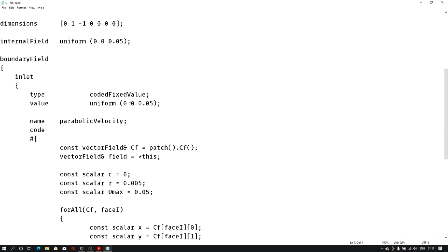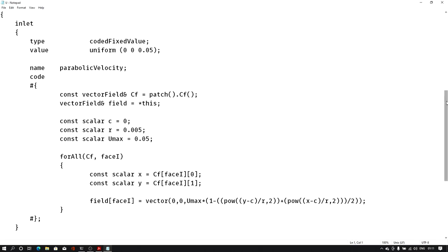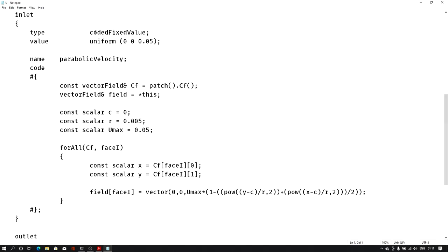Now here as you can see I have already defined something for inlet - the same code I have explained. Its type is codedFixedValue. Now this value I have to give as some default value. Then we have the name term - the name is parabolicVelocity. Here you can give any name of your choice, for example myParabolicVelocity or myVelocity.